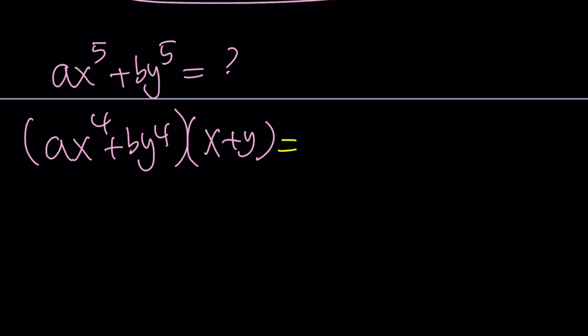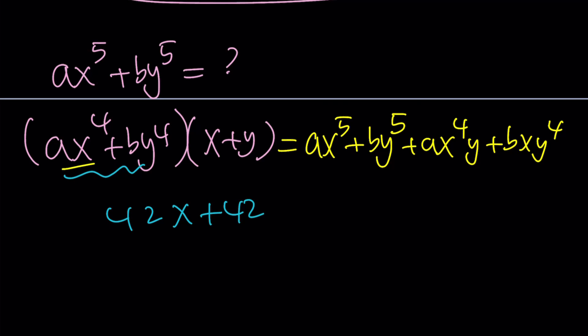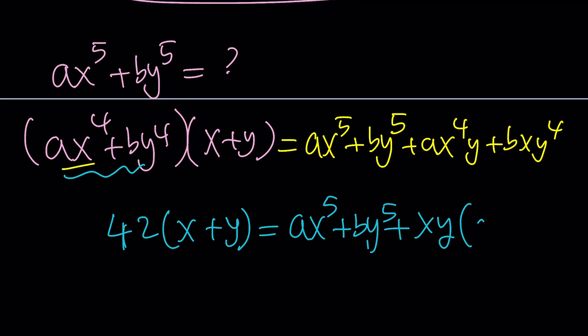Now, when you distribute these, you're going to get ax to the 5th plus by to the 5th, which is what we're looking for, right? And then, we're going to get ax to the 4th y and bxy to the 4th. Notice that x and y switch around. And now, ax to the 4th plus by to the 4th is known. It's 42. So, this becomes 42x plus 42y. Or, I could probably leave it like this because I know x plus y. So, 42 times the quantity x plus y. And this is what we're trying to find.